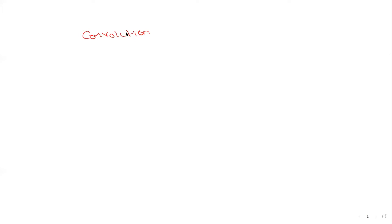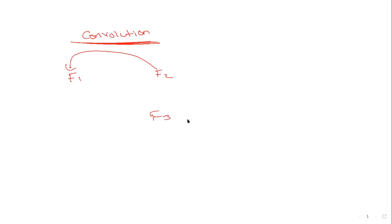What do we mean by convolution? Suppose you have function one and function two. When you run function two on function one, you get a new function called function three — that is called convolution. So if you perform the operation of function two on function one, the result is a new function three. That is what convolution means.